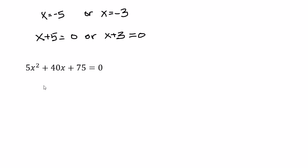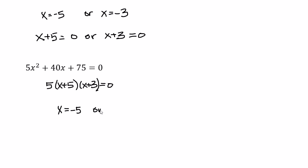Notice when we worked this problem using trial and error, we factored out a 5 and found (x + 5)(x + 3) = 0. Using the quadratic formula we found the same solutions: x = -5 or x = -3, confirming both methods give equivalent equations and the same solution set.